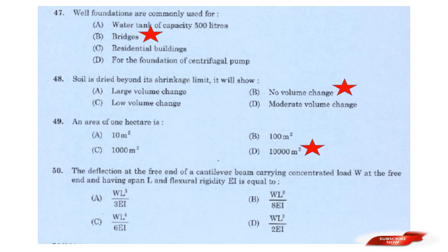Question: The deflection at the free end of a cantilever beam carrying a concentrated load W at the free end, having span L and flexural rigidity EI, is equal to? Options: WL³/3EI; WL³/8EI; WL⁴/EI; WL³/6EI; WL³/2EI. Answer: Option A — WL³/3EI.